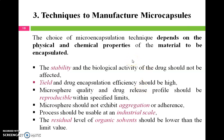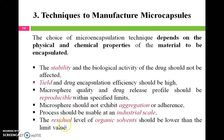The third point is methods of manufacturing microcapsules. There are a number of methods available, and the choice depends on the physical and chemical properties of the material to be encapsulated. Considerations include: stability and biological activity of the drug should not be affected; yield and drug encapsulation efficiency should be high; microsphere quality and drug release profile should be reproducible; microspheres should not exhibit aggregation; the method must be usable at industrial scale; and residual levels of organic solvent should be below the permissible limit.